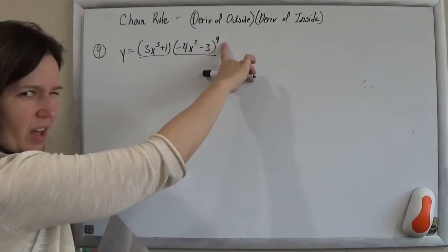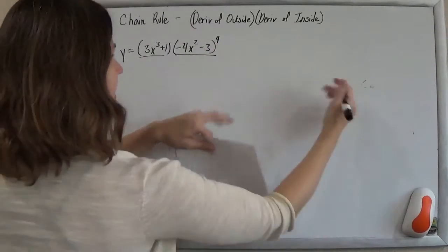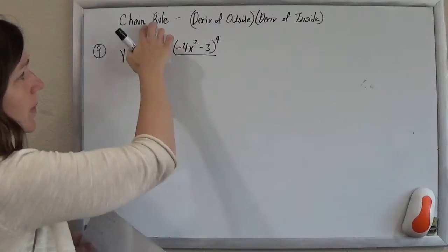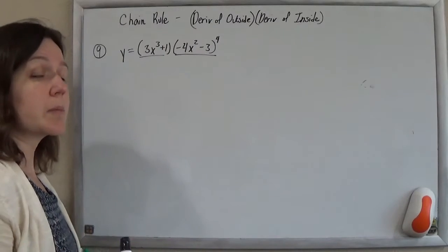I'd rather not foil that thing out four times and then expand that thing into that. I'd rather not do it. So now we have our chain rule to help us out when it comes time for it.